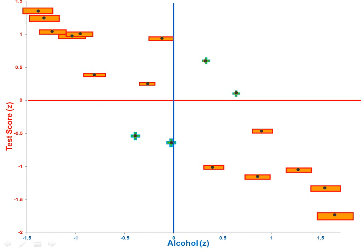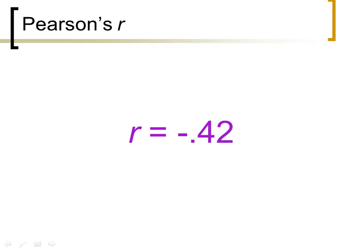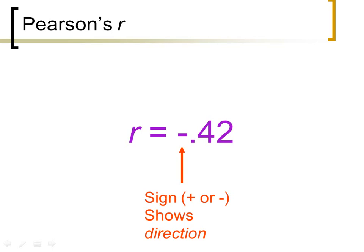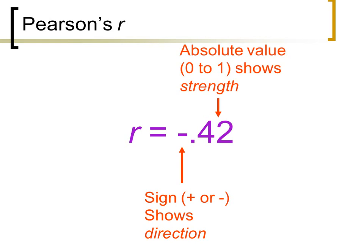We usually write the correlation coefficient as r (italicized). r must have a sign — if there's no sign, it's assumed to be positive. It always falls between -1 and +1 and can't exceed those bounds. We don't usually write a zero in front of it — just negative-point-something or point-something. The sign shows the direction of the correlation. The absolute value of the correlation coefficient tells us how strong it is, so -0.42 is just as strong as +0.42, just reversed in direction. It's easy to reverse direction simply by redefining your variable to its opposite.